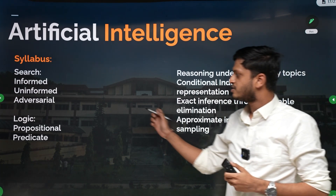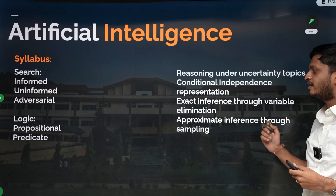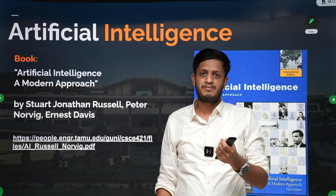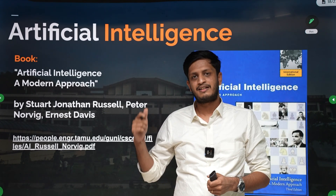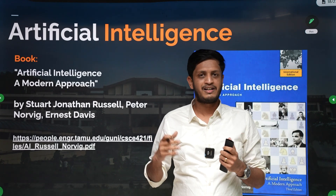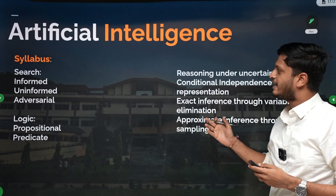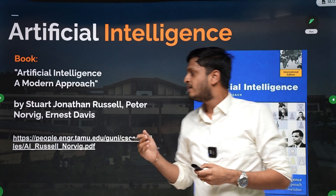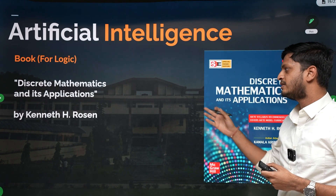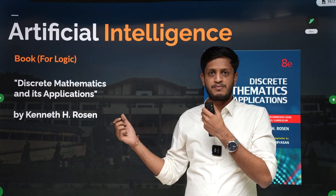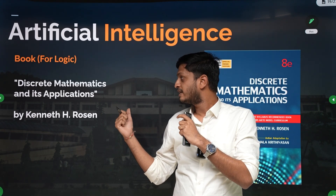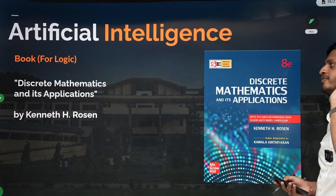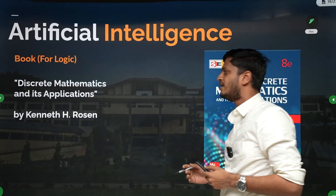For AI, there are three parts: search, logic, and reasoning under uncertainty. Search and reasoning under uncertainty are covered in Peter Norvig's AI textbook — the standard book followed in all IITs for AI courses, which we also read in our M.Tech. It covers the entire AI syllabus including logic, but the logic part in that textbook is not very easy to understand. For logic specifically, you can refer to Kenneth Rosen's discrete mathematics book.